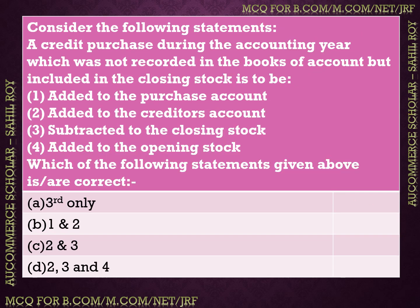Consider the following: a credit purchase during the accounting year was not recorded in the books of accounts but was included in closing stock. What should be done? Options: (1) added to the purchase account, (2) added to the creditors account, (3) subtracted from closing stock, (4) added to opening stock. The correct answer is option A and B — it should be added to the purchase account and added to the creditors account.